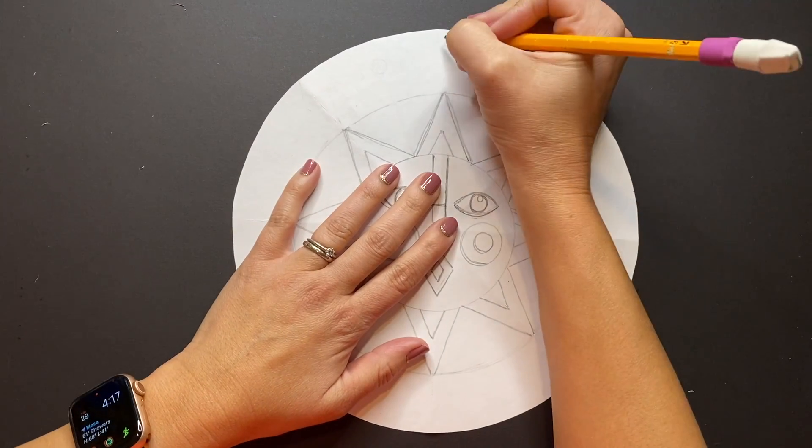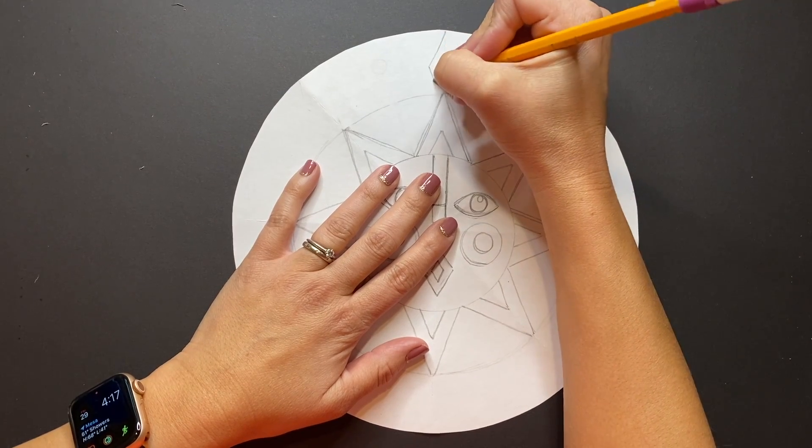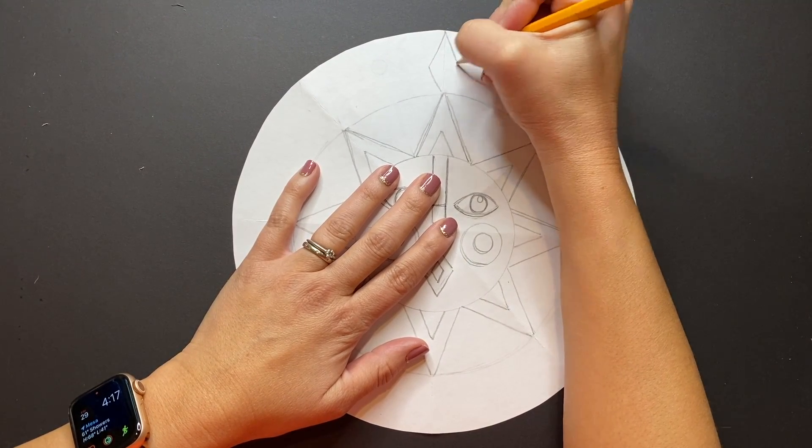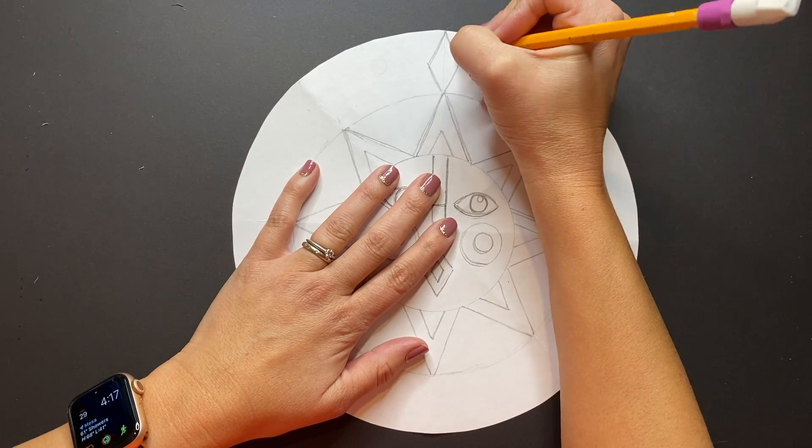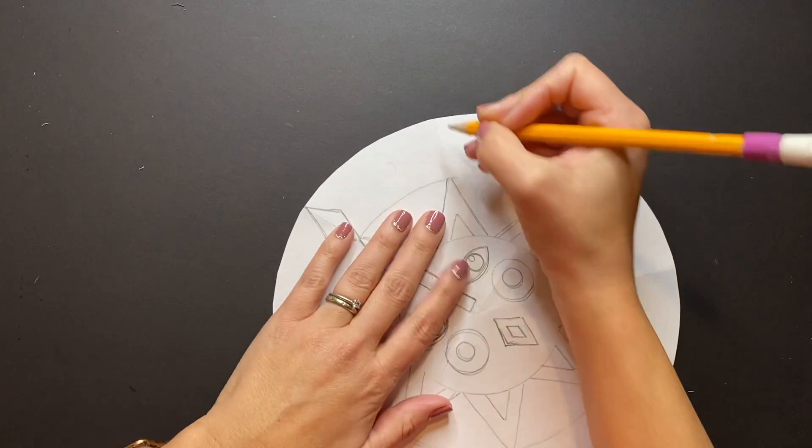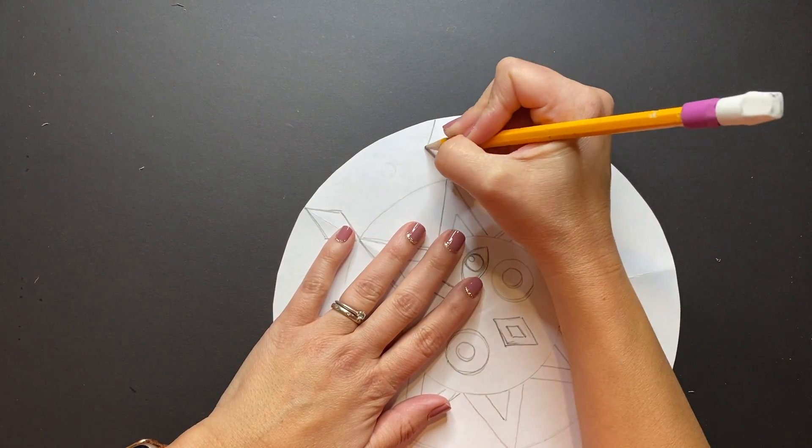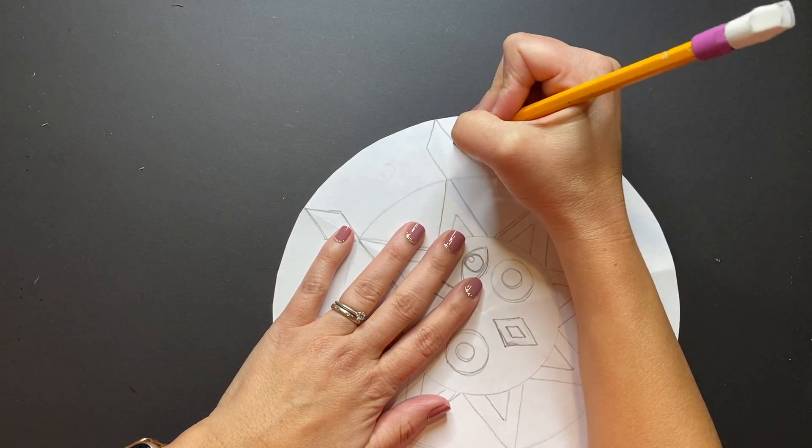On the outer ring you are going to create any unique design that you would like, so using previous knowledge of lines and shapes and patterns, create a unique design for your Aztec sun. If you'd like to copy me, just follow along.